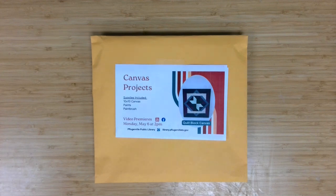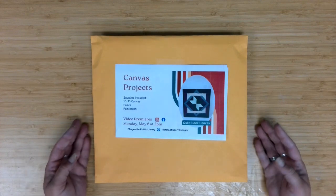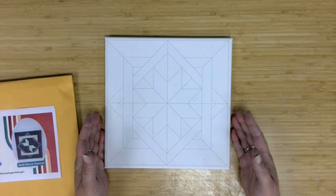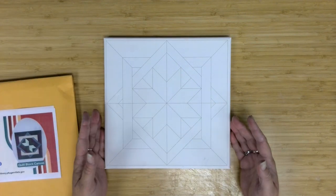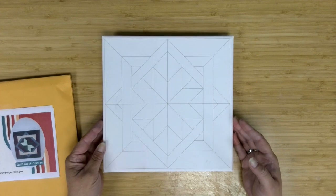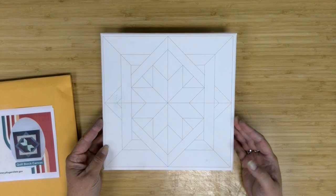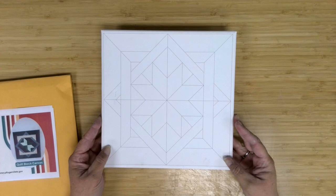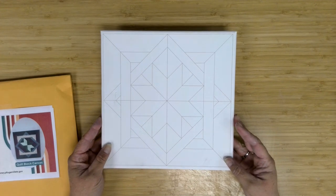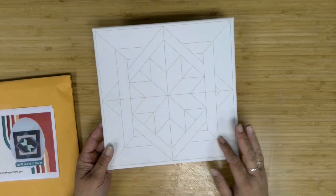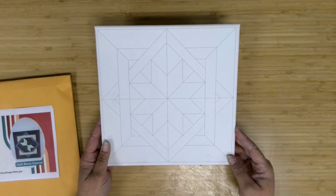Let's start with a look at the supplies being provided. In our envelope this month, you are getting a 10 by 10 canvas with the quilt block pattern already etched on. I did use our library laser cutters to make this pattern on there. It was kind of the quickest way. Each one took about three minutes to etch using just a real low power three to do the lines on there.